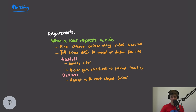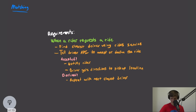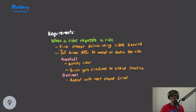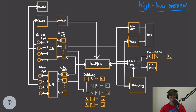For matching a rider to a driver, we subscribe to the event that a rider requests a ride. Once that happens, we find the closest driver using our ride service, then tell the driver API to either accept or decline the ride. If they accept, we notify the rider, who can look up information about the driver, and the driver gets directions to the pickup location. If declined, we repeat the process for the next closest driver.